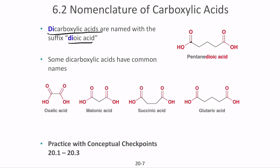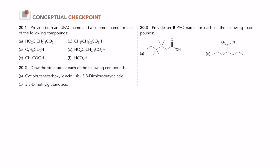For example, a five-carbon chain with two COOH groups is pentanedioic acid. Common names include malonic acid for propanedioic acid, succinic acid for butanedioic acid, and glutaric acid for pentanedioic acid. Use the knowledge from nomenclature now and try to solve the practice problems — pause the video and try to solve them.